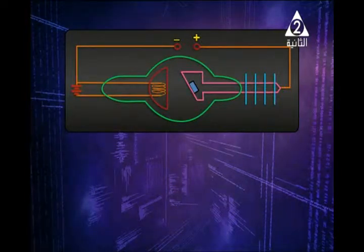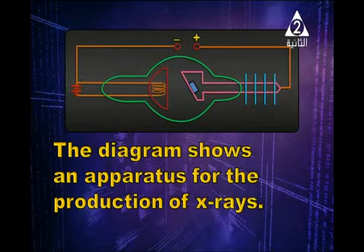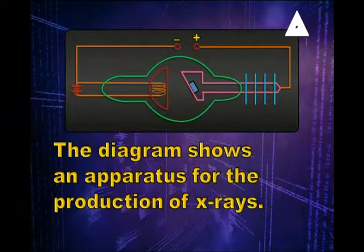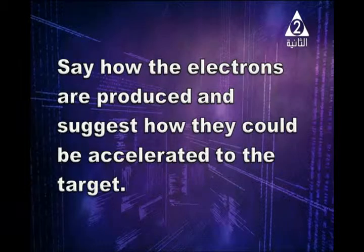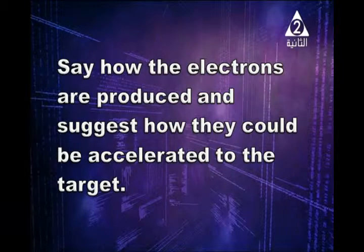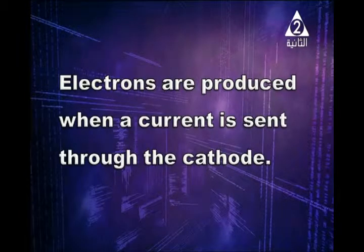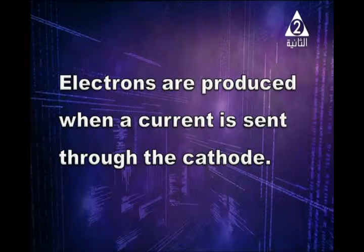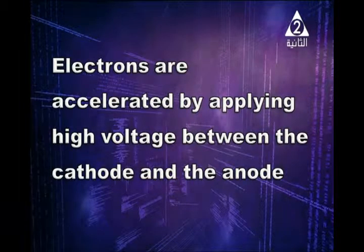The diagram shows an apparatus for the production of X-rays. Electrons are produced when a current is sent through the cathode. Electrons are accelerated by applying a high voltage between the cathode and the anode.